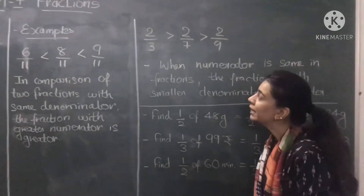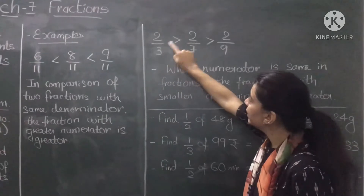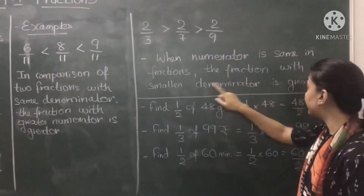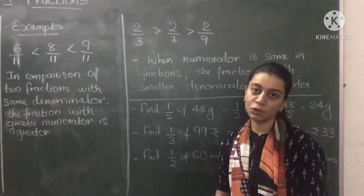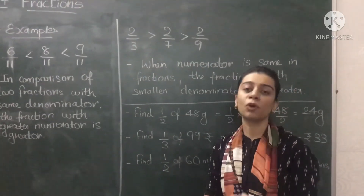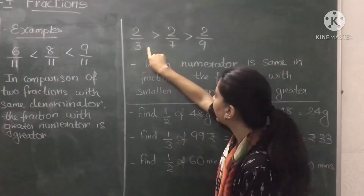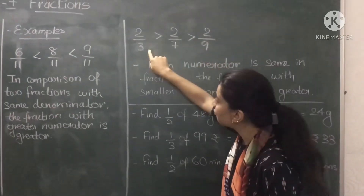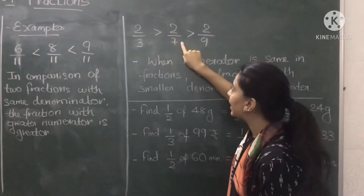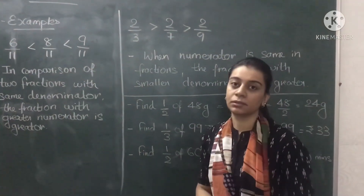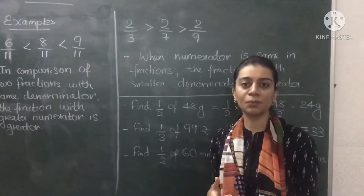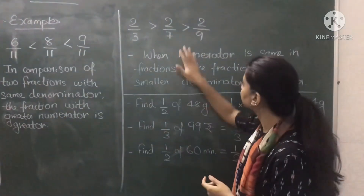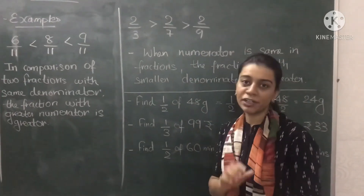Now let us look at the next example. Here we have the same numerator: 2 by 3, 2 by 7, and 2 by 9. When the numerator is the same in fractions, the fraction with the smaller denominator is greater. So we check the denominator, and out of 3, 7, and 9, the smallest denominator is 3, so 2 by 3 is the greatest fraction. To summarize: when there is the same denominator, we check the numerator — the greater numerator is greater; when there is the same numerator, we check the denominator — the smaller denominator gives the greater fraction.